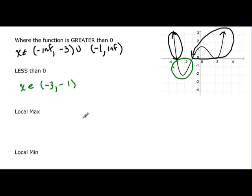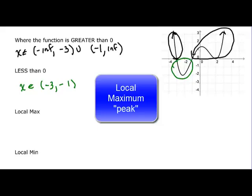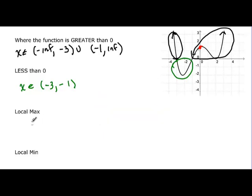And then we'd have to talk about maximums and minimums. Local max, there is one right here. Let's make that red. There's my local max, and I only have one. So it would be at y equal, and that looks like it's about 1.5.